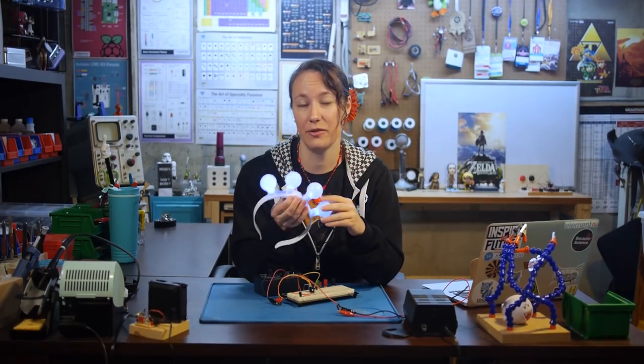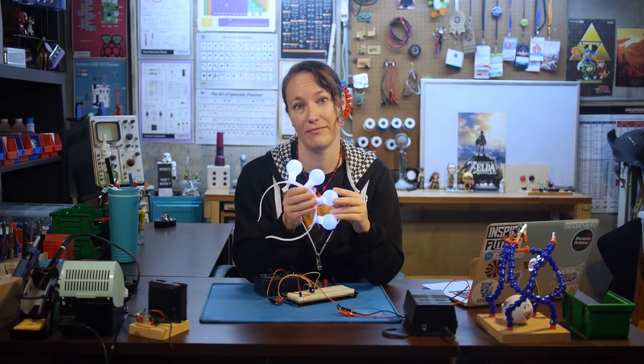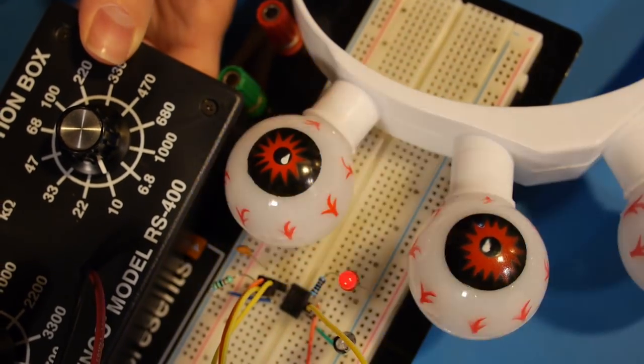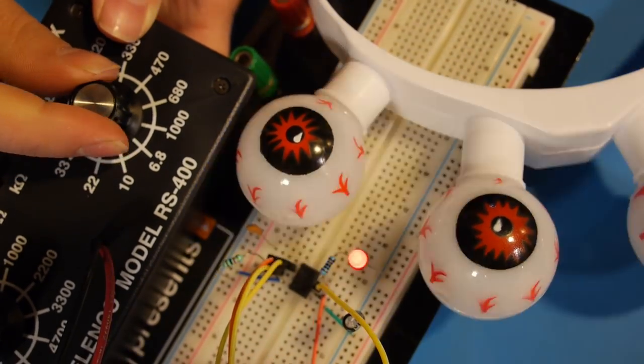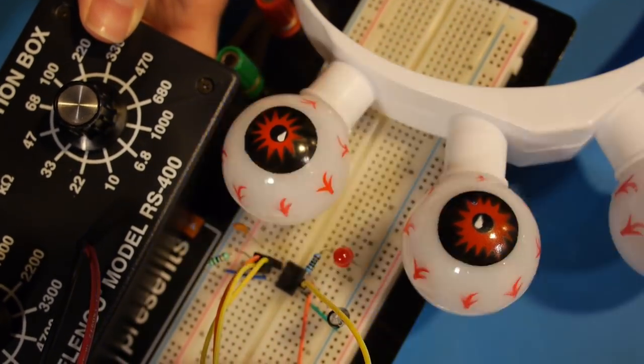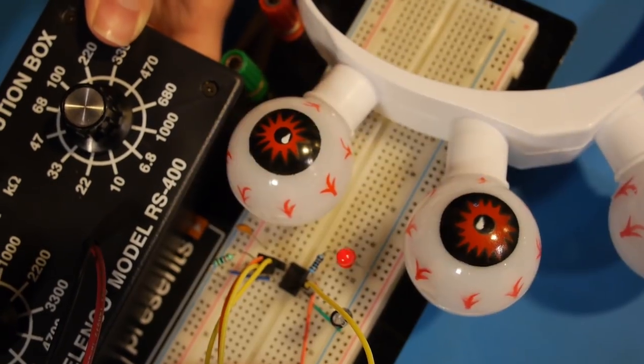Okay, I'll switch the headband to the slow blink to see if we can find a value to match this speed. 10 kilohms is still a little bit too fast for the LED. Let's switch to 22 kilohms. That's a little closer. That's a nice speed. So 22 kilohms is pretty close to the speed of the slow blink.